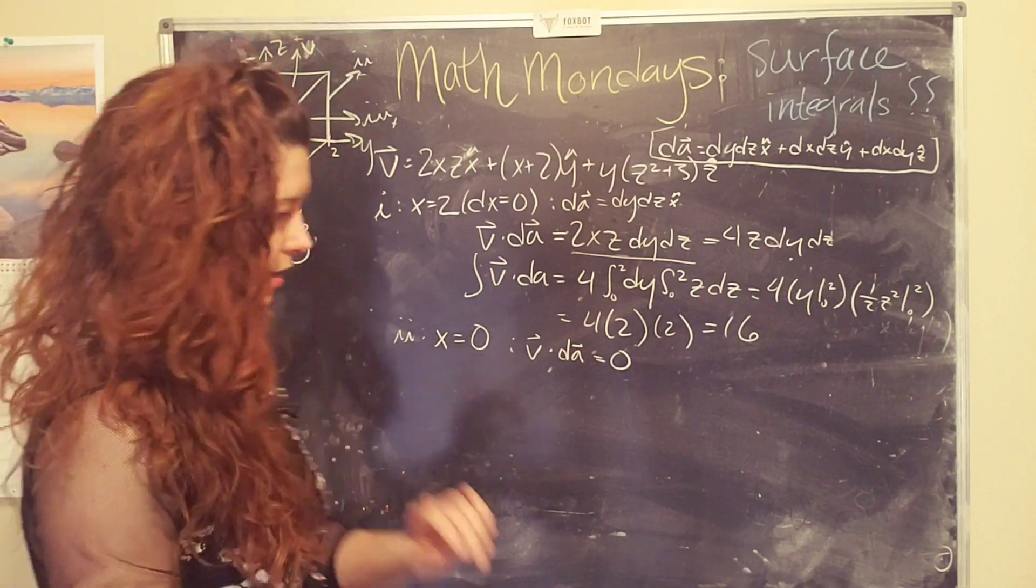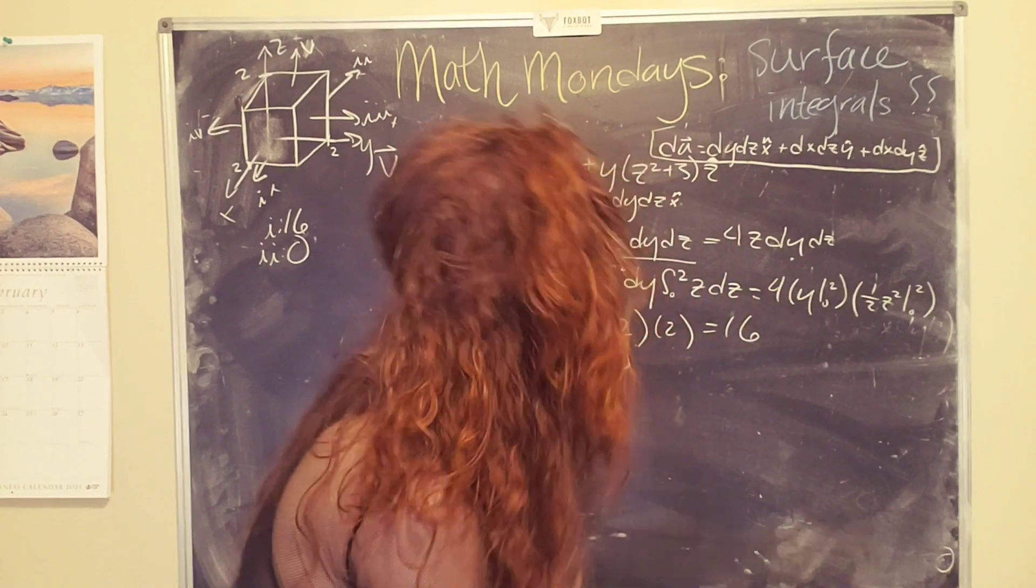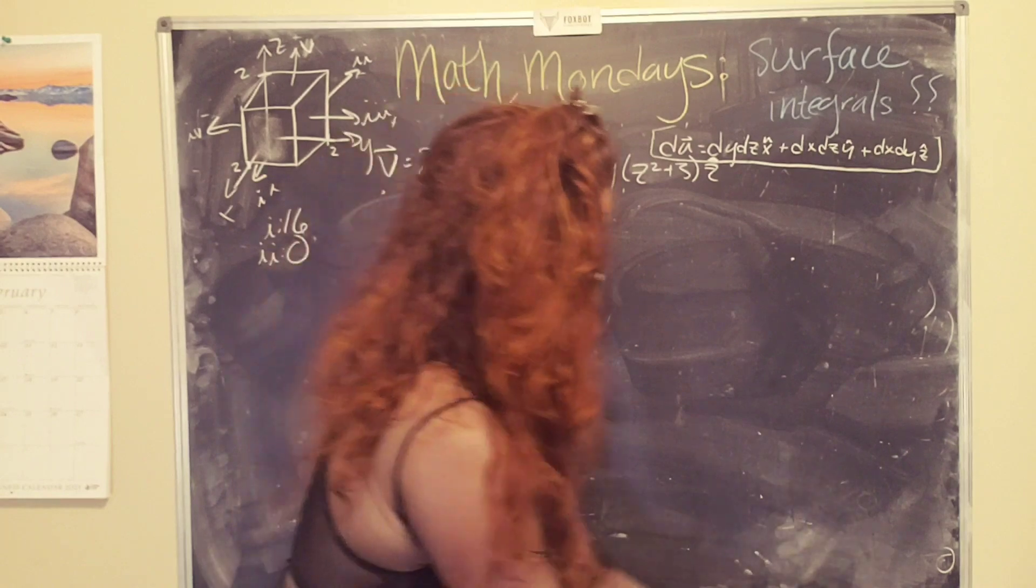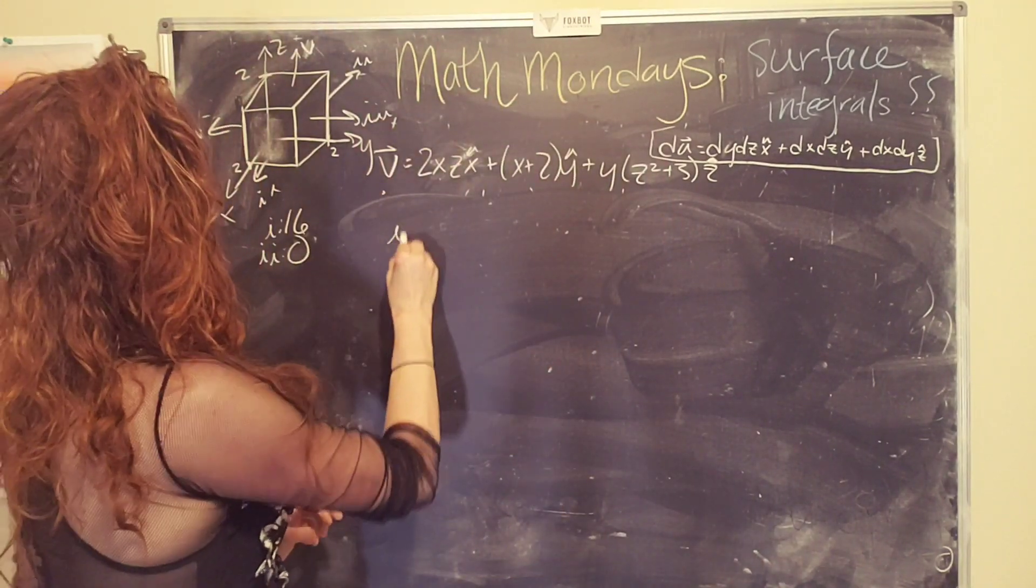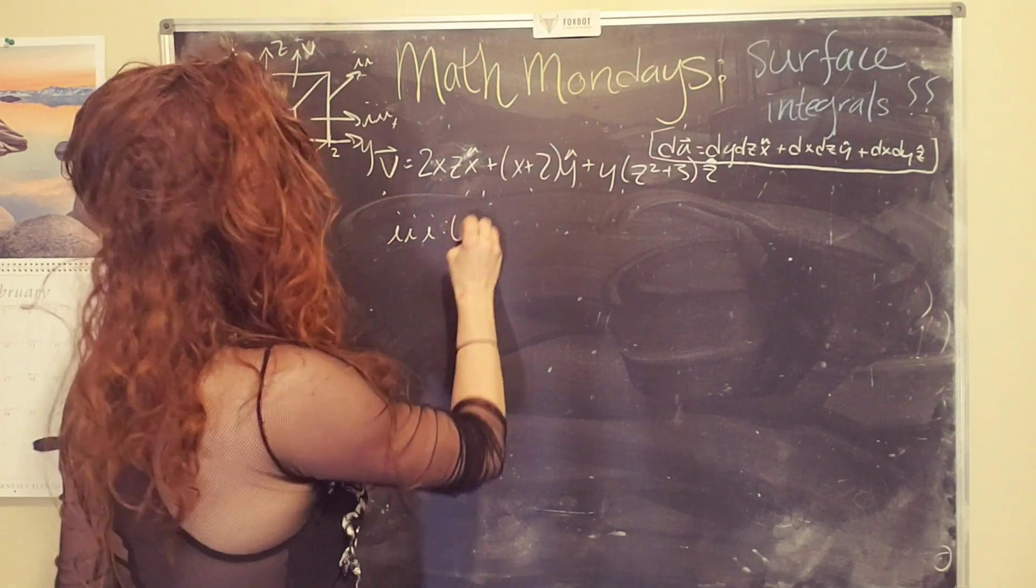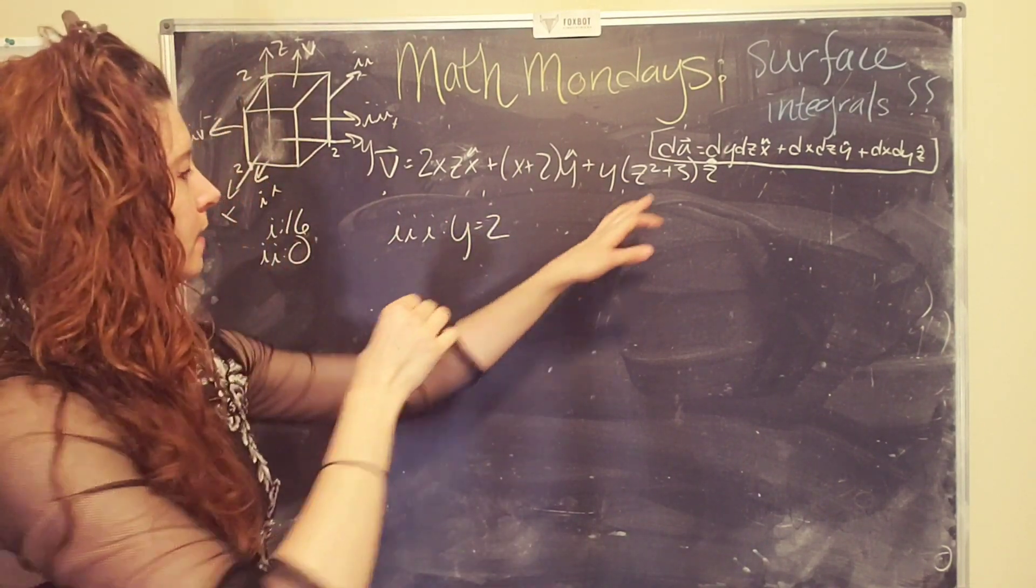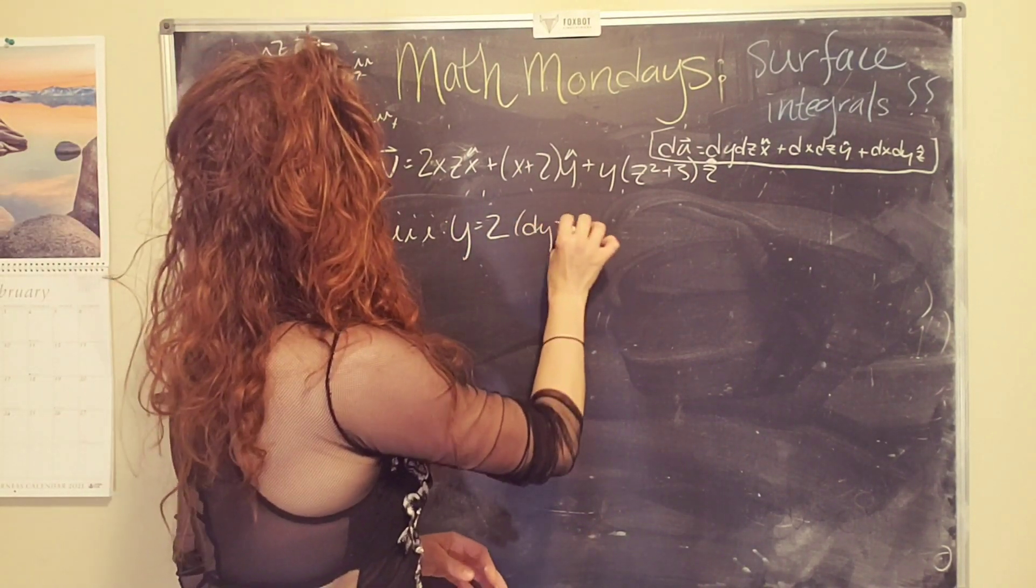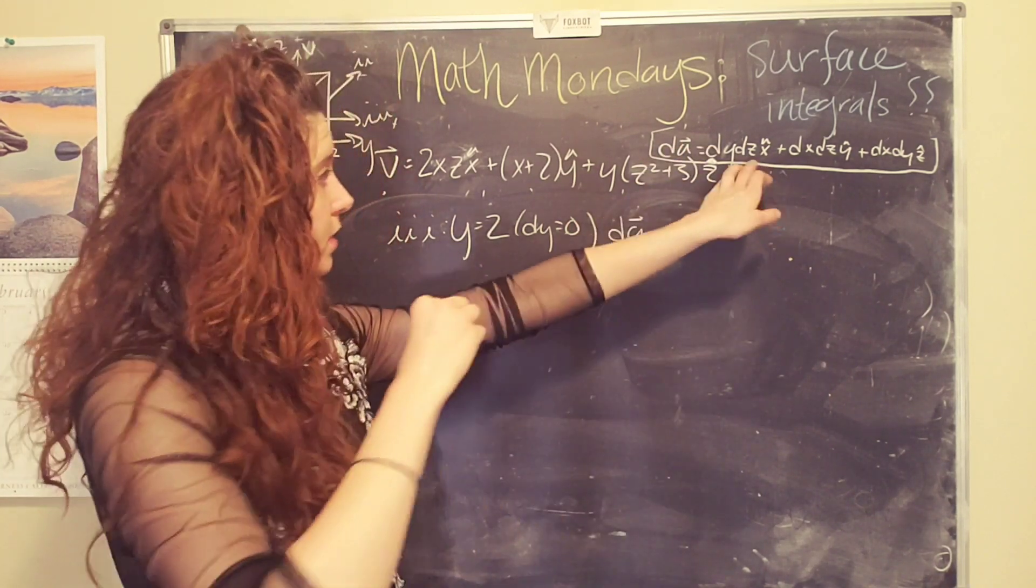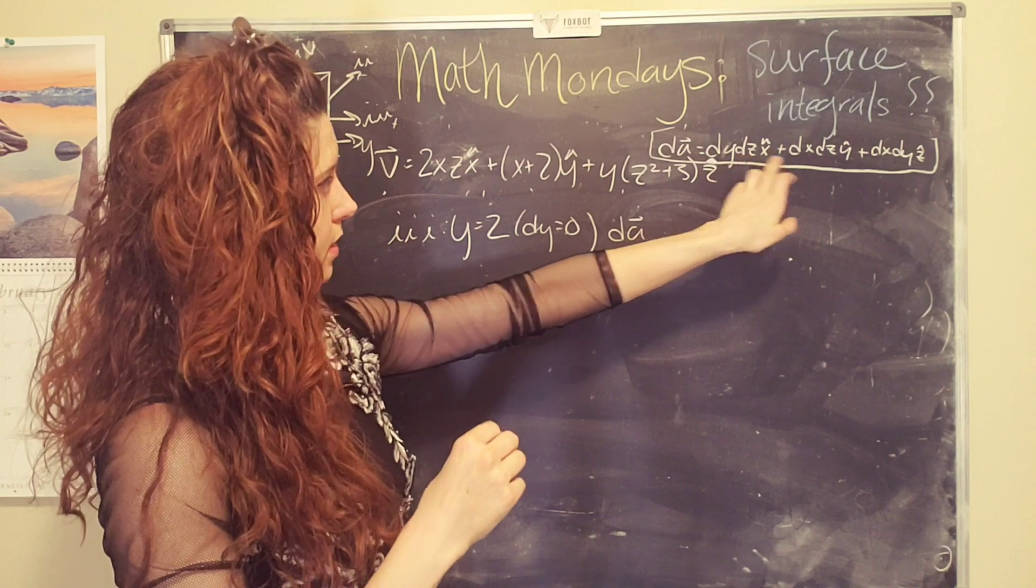So that goes to zero. I'm going to erase it to give myself a little bit more space. I want to keep my equation. Okay. Cruising right along. Let's do surface number three. So in this case, y equals two. dy is zero.